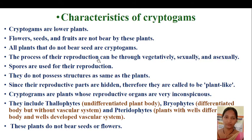The process of their reproduction can be through vegetative, sexual or asexual. Spores are used for their reproduction. They do not possess a structure like a higher plant, since their reproductive parts are hidden — the spores or sporangia are hidden within a thallus structure. Cryptogames are plants whose reproductive organs are very inconspicuous, meaning they are hidden within a thallus.